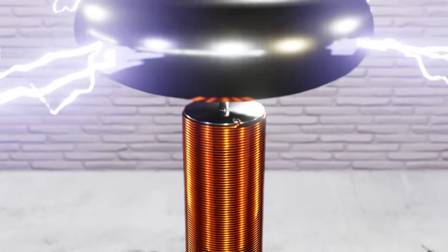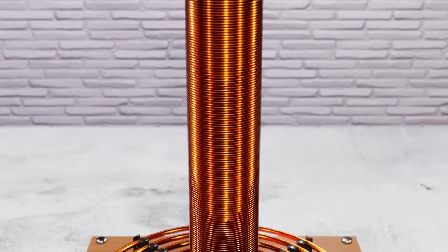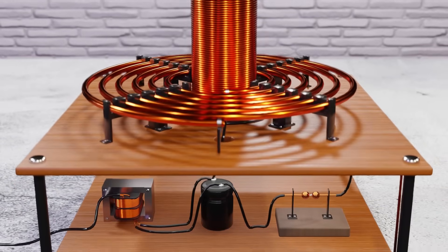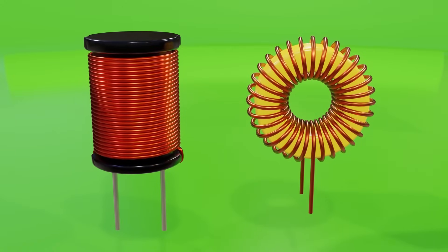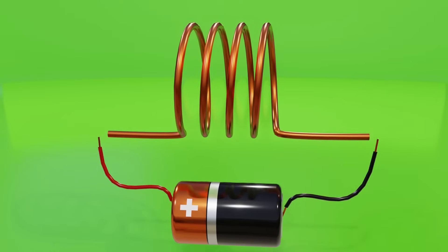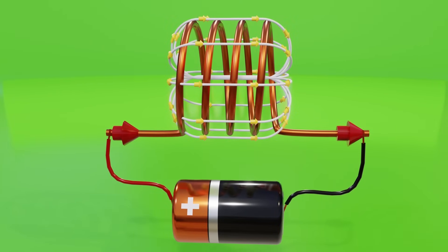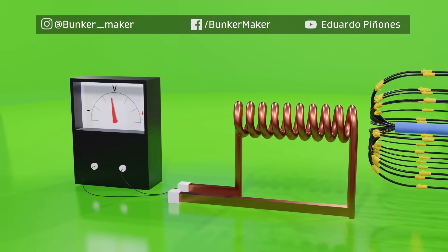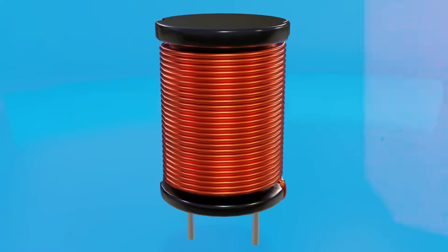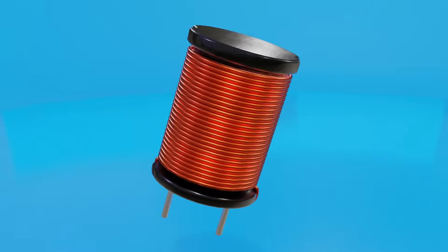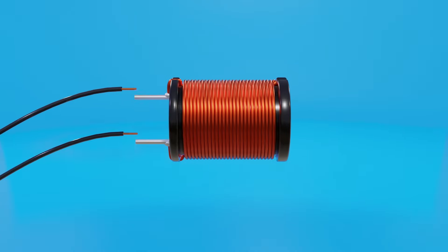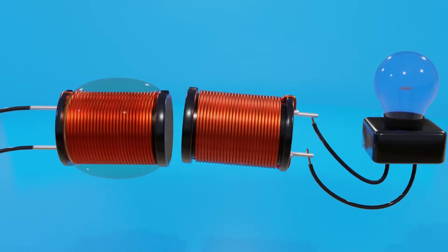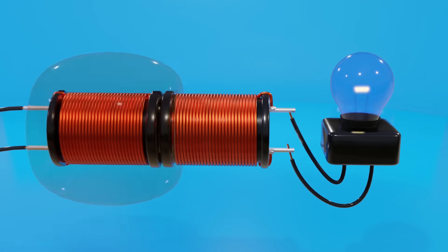Before talking about how a Tesla coil generates those gigantic electric arcs, we have to understand Nikola Tesla's objective and logic. We previously discussed how a coil works: an electric current flowing through a coil generates a magnetic field, and the variation of a magnetic field can induce a current in another coil. Understanding these two phenomena, we could apply current to a coil to generate a magnetic field, then use that field to induce a current in a nearby coil — transmitting power wirelessly.